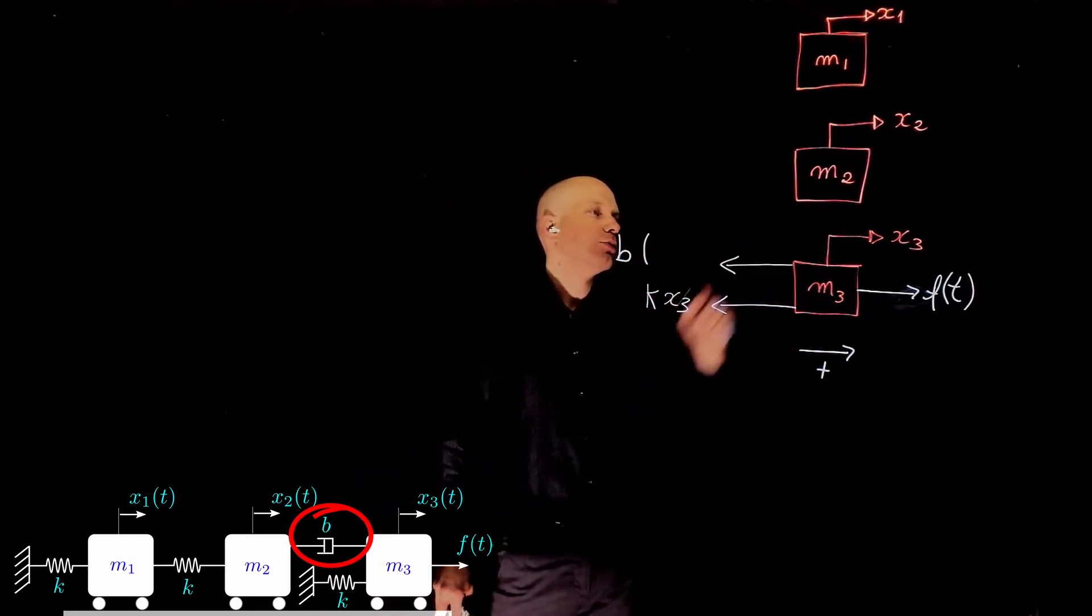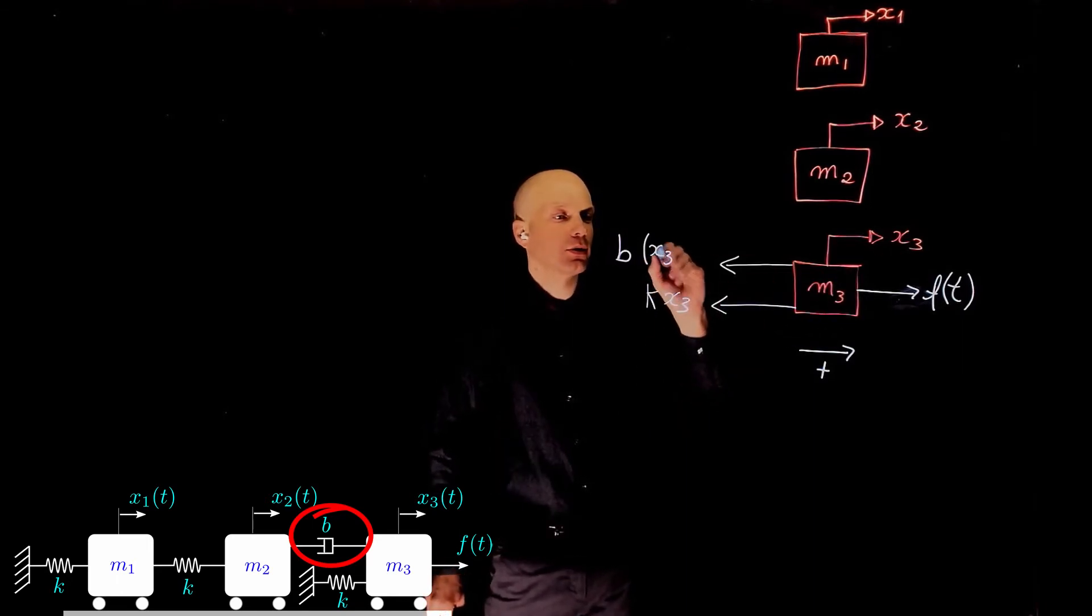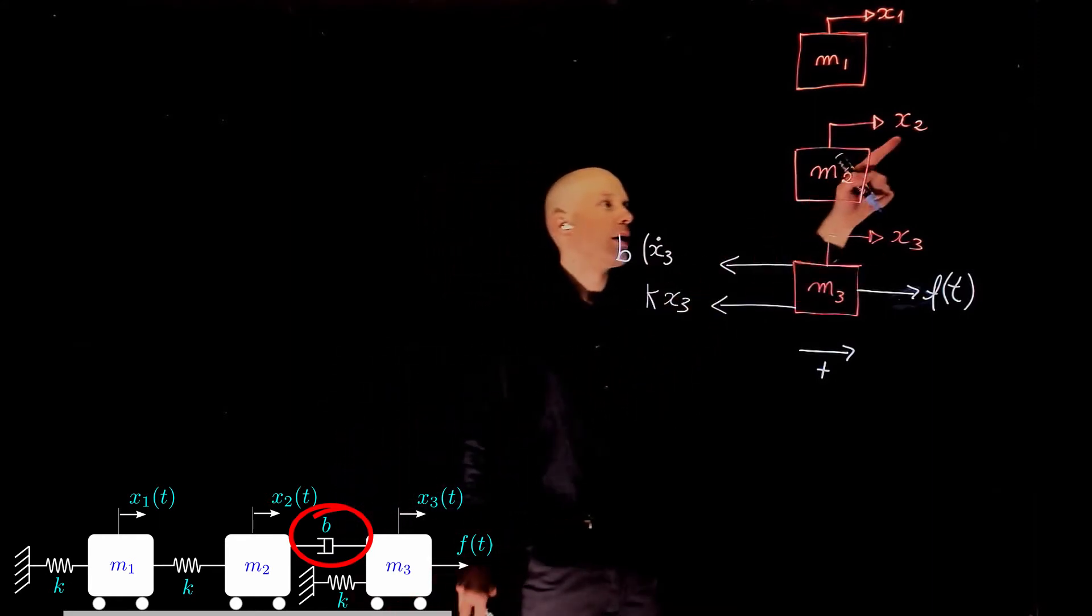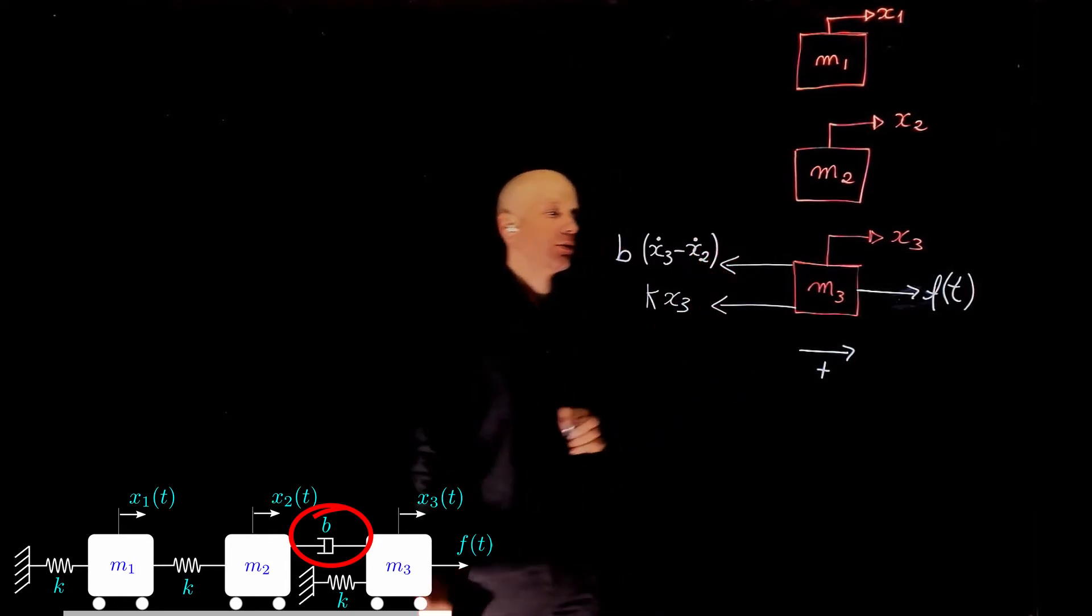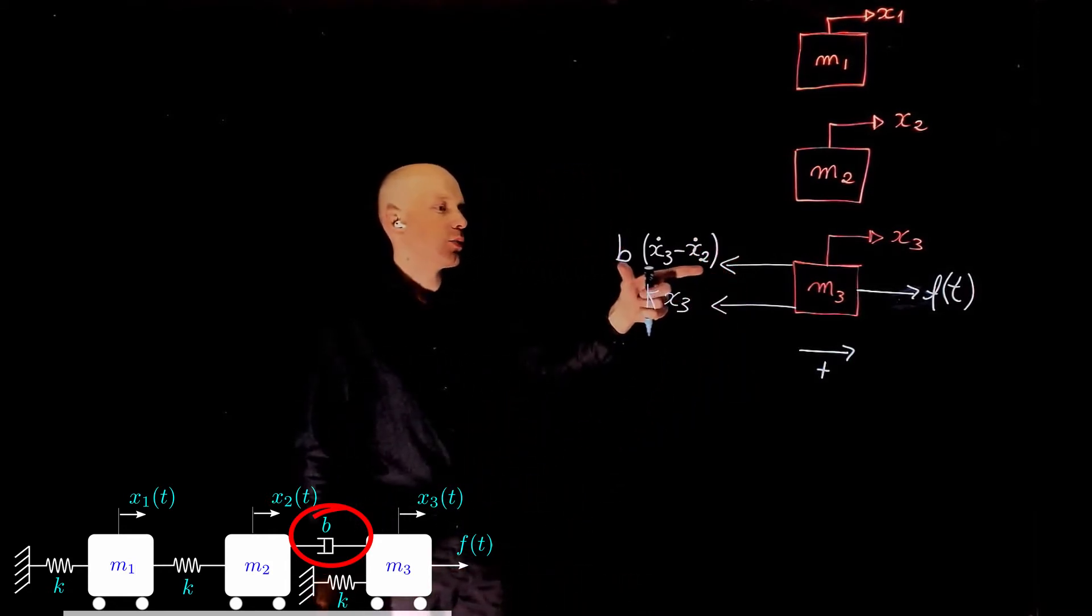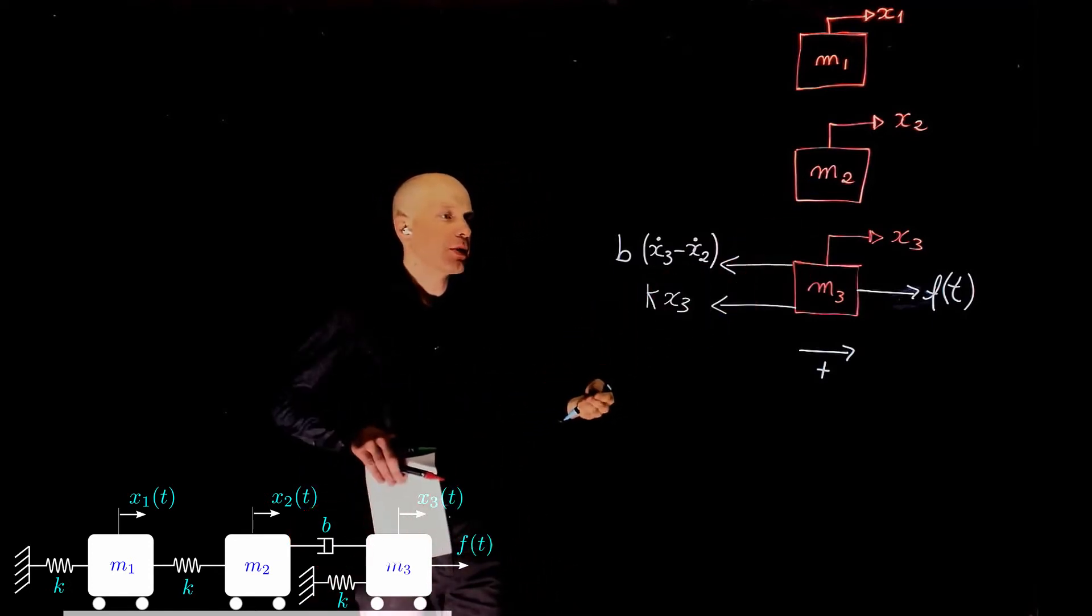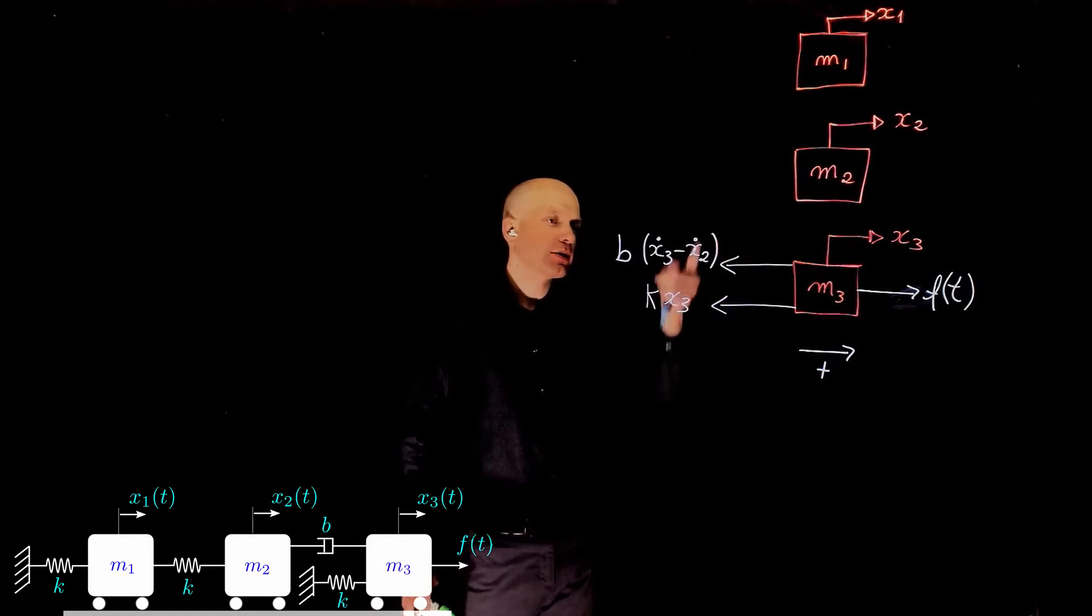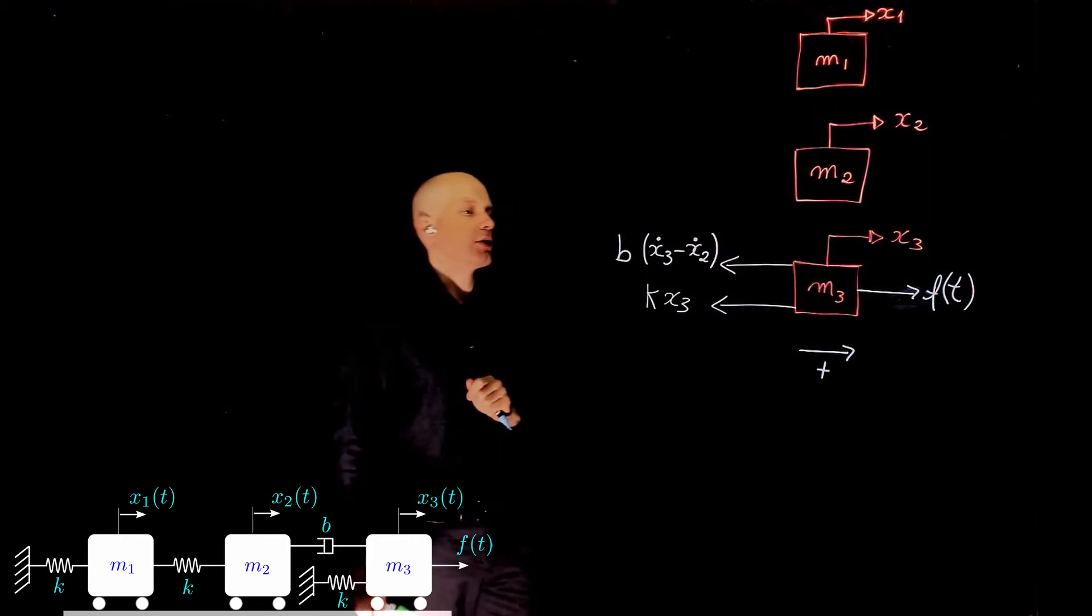We can now write the force as the coefficient of viscous friction of that damper b times the difference in the speed between m2 and m3, so b(x3 dot minus x2 dot), where dot is the first derivative of displacement with respect to time. This is the relative speed between them. If they move at the same speed, then the damper provides no force because this is zero. And if m2 is fixed, then x2 dot would be zero and it would have b times x3 dot.